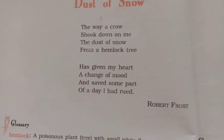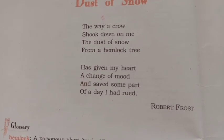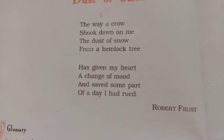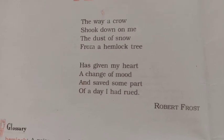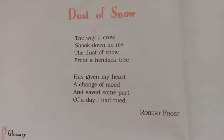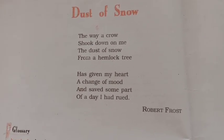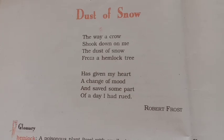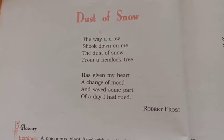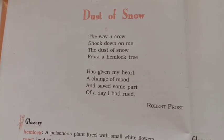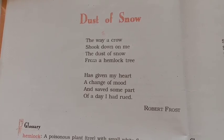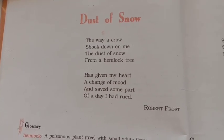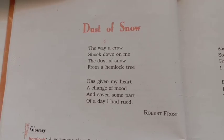'Dust of Snow' is a beautiful short poem written by Robert Frost. This poem tells us that even a simple moment has a large impact and significance. The poet has mentioned a crow and a hemlock tree. The crow signifies his depressive and sorrowful mood, and the hemlock tree is a poisonous tree. Both of these signify that the poet was not in a good mood, and he describes the dark, depressive, and bitter side of nature to present his similar mood.